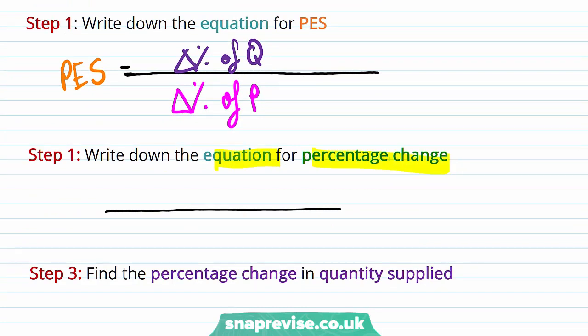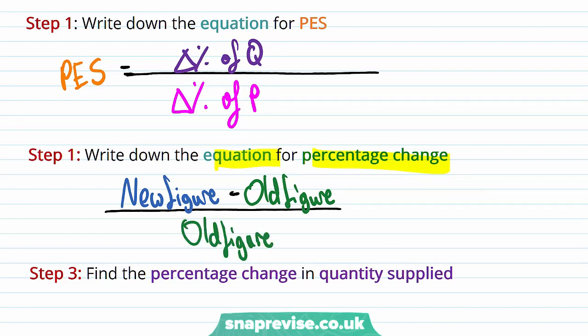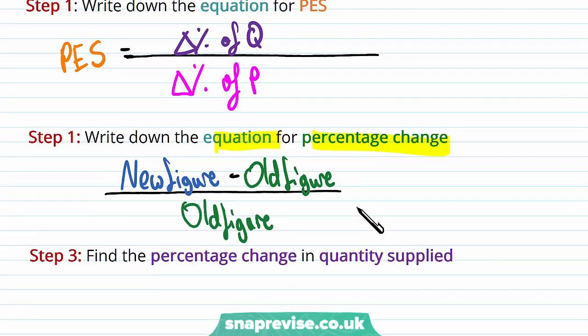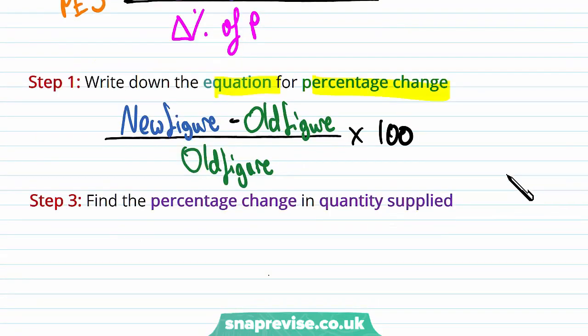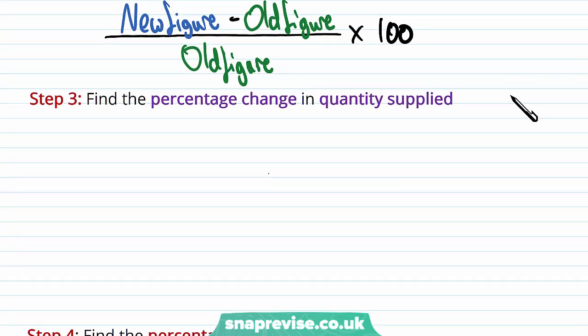And what about our equation for percentage changes? For that, we're going to be using our raw numbers to work out our percentage change. So it will be new figure minus old figure divided by the old figure, and then that is multiplied by 100.